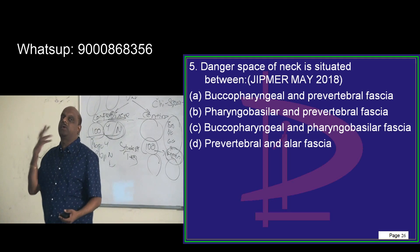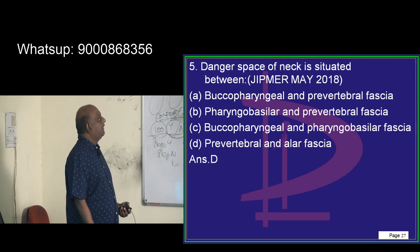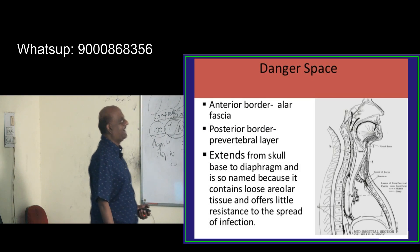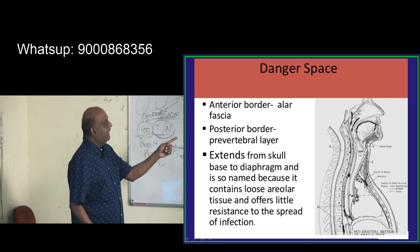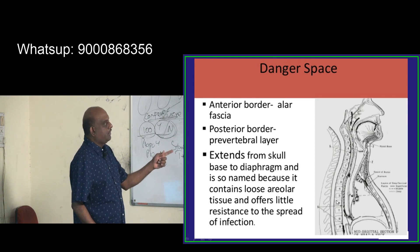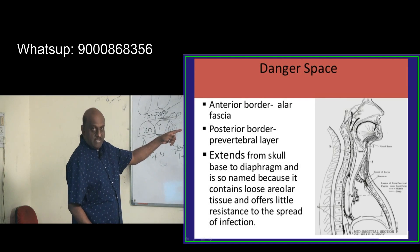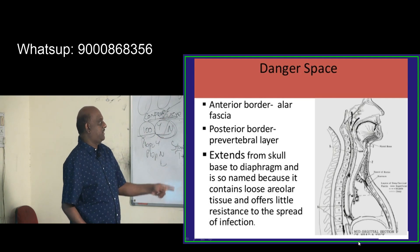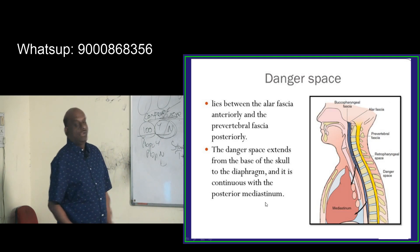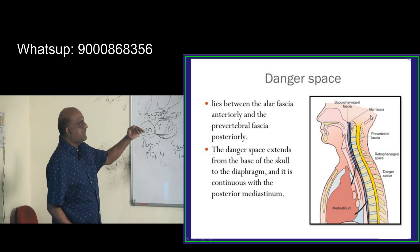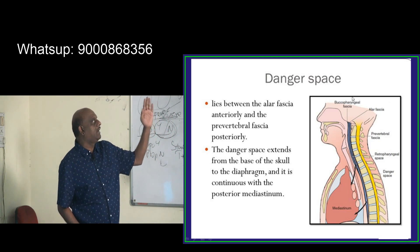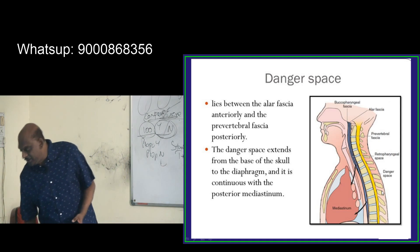Now an interesting question: the dangerous space of the neck — where is it located? It is typically located between the prevertebral and alar fascia. The posterior border is formed by the prevertebral layer. This space is important because it extends all the way from the base of the skull to the diaphragm, contains very loose areolar tissue with little resistance to infection, and has a good connection with posterior mediastinal structures — meaning any inflammation can spread toward the brain.